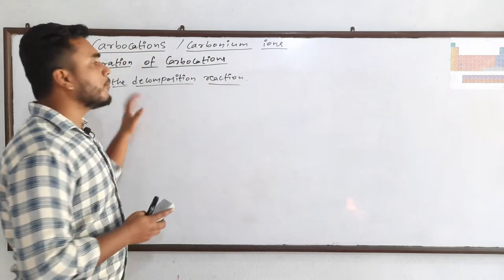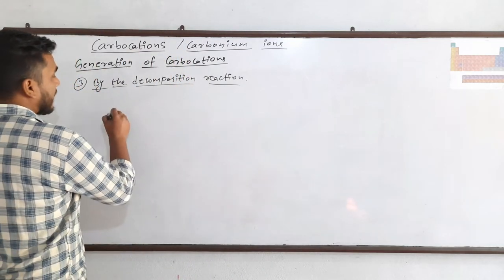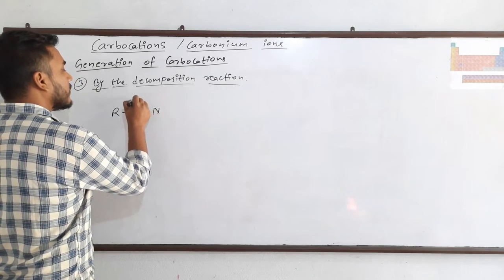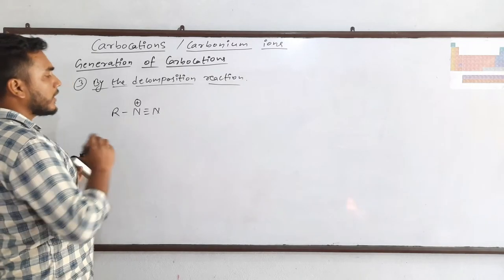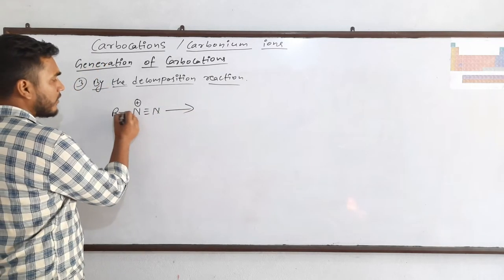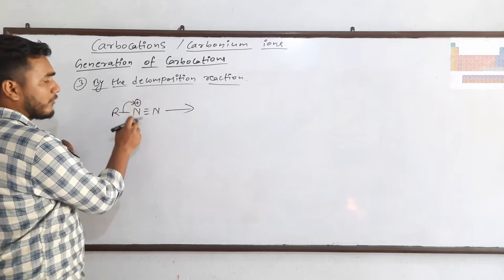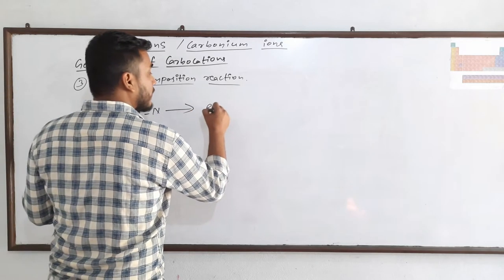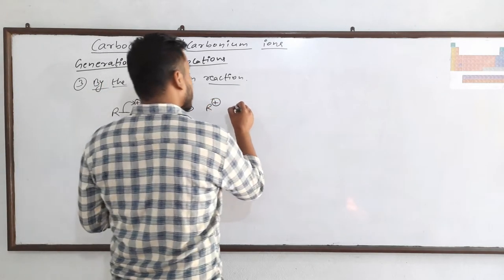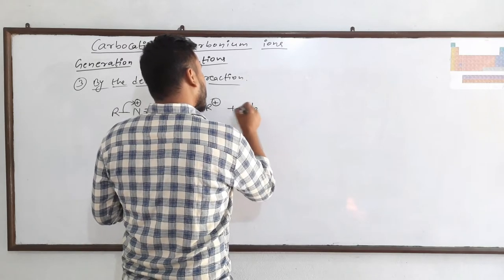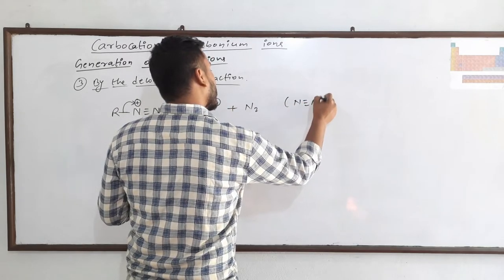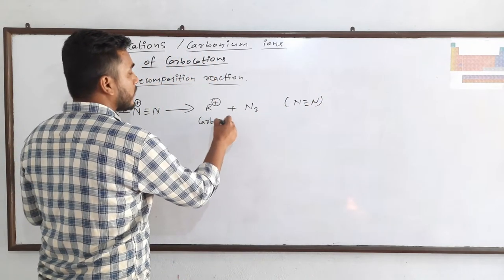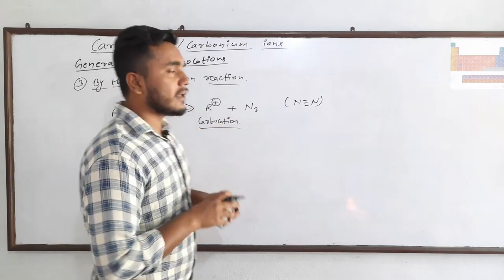The third method is by decomposition reaction. For example, a diazonium-type compound (R-N≡N⁺) undergoes decomposition: the C-N bond breaks heterolytically since nitrogen is more electronegative, nitrogen leaves as N₂, and R⁺ — the carbocation — is formed.